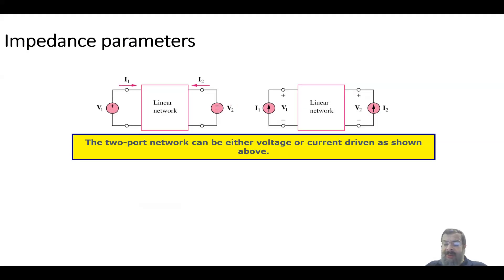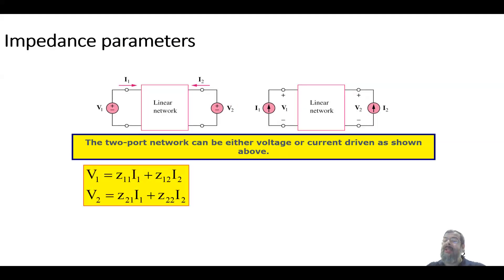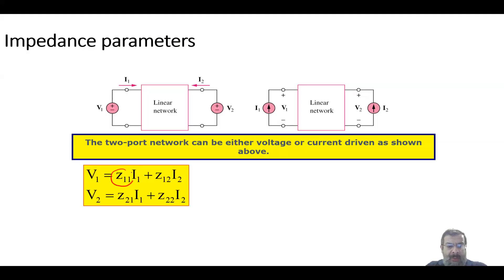...regardless of whether it is voltage- or current-driven, is governed by: v1 = z11·i1 + z12·i2, and v2 = z21·i1 + z22·i2. The question asks you to find z11, z21, z12, and z22 — that is what you are asked for.